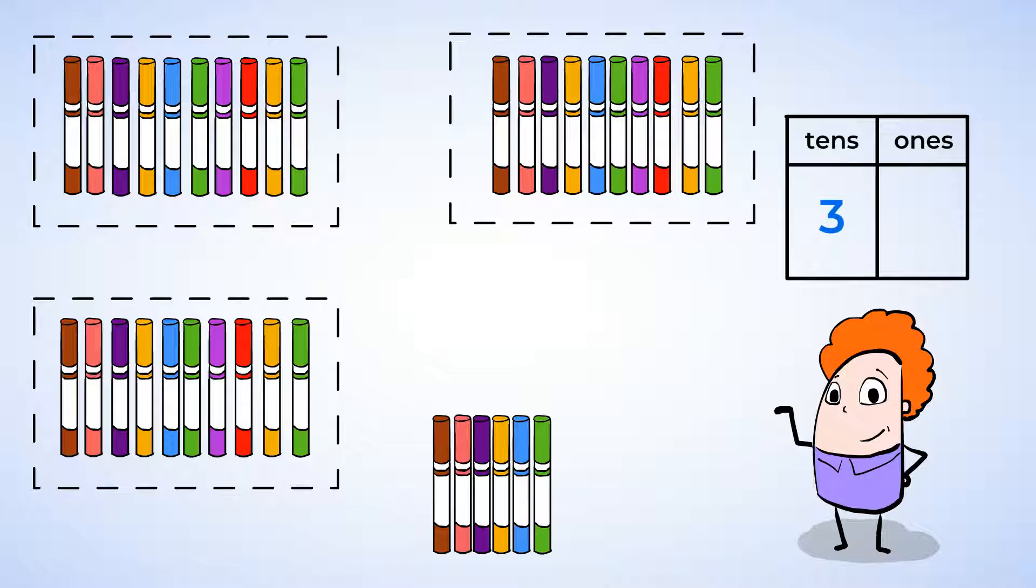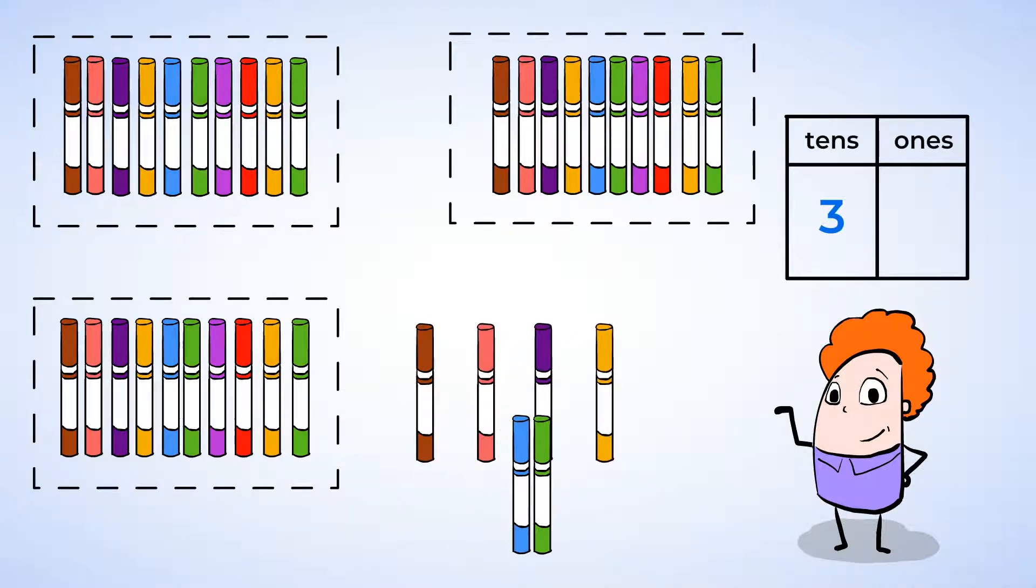And how many 1s are there? 1, 2, 3, 4, 5, 6. There are 6 1s. Write the number 6 in the 1s place of the chart. And can you read the number in the chart? It says, that's right, 36. This means that 3 10s and 6 1s is actually the number 36.